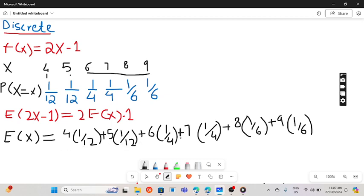Plus 9 multiplied with 1 by 6. So if you solve all of this: 4, 5, 6, 7, 8, and 9, you get 41 by 6. I will highlight it, you get this one.